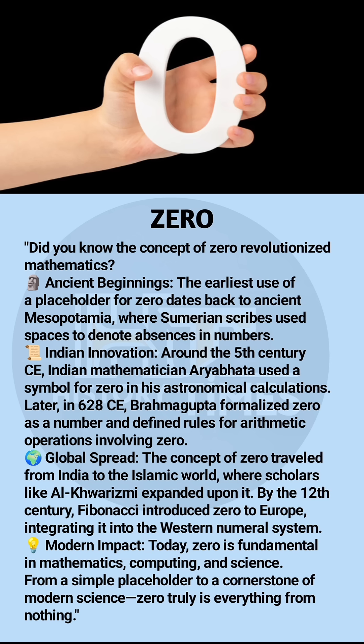Indian innovation. Around the 5th century CE, Indian mathematician Aryabhata used a symbol for zero in his astronomical calculations. Later in 628 CE, Brahmagupta formalized zero as a number and defined rules for arithmetic operations involving zero.